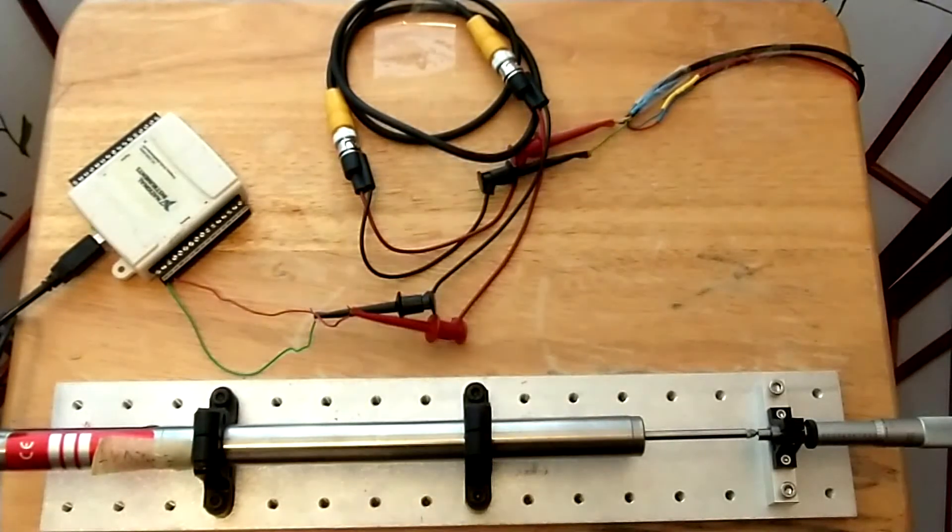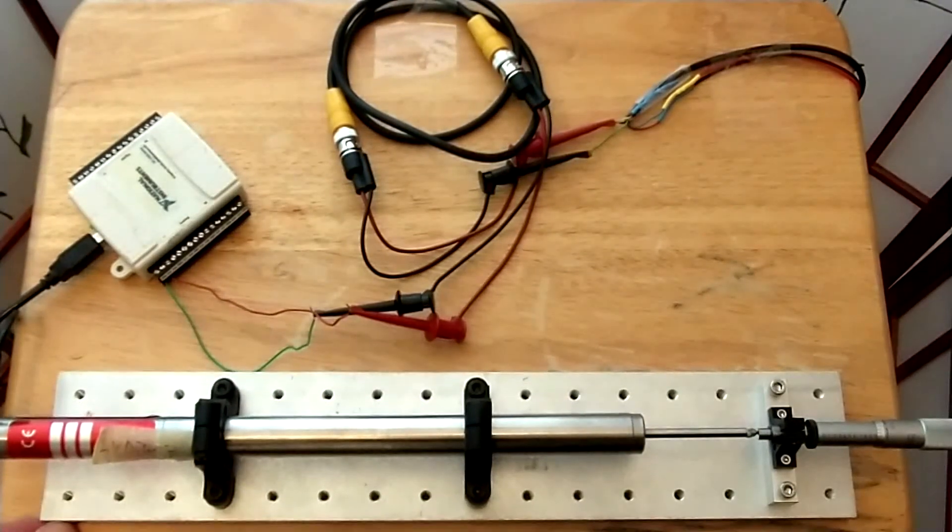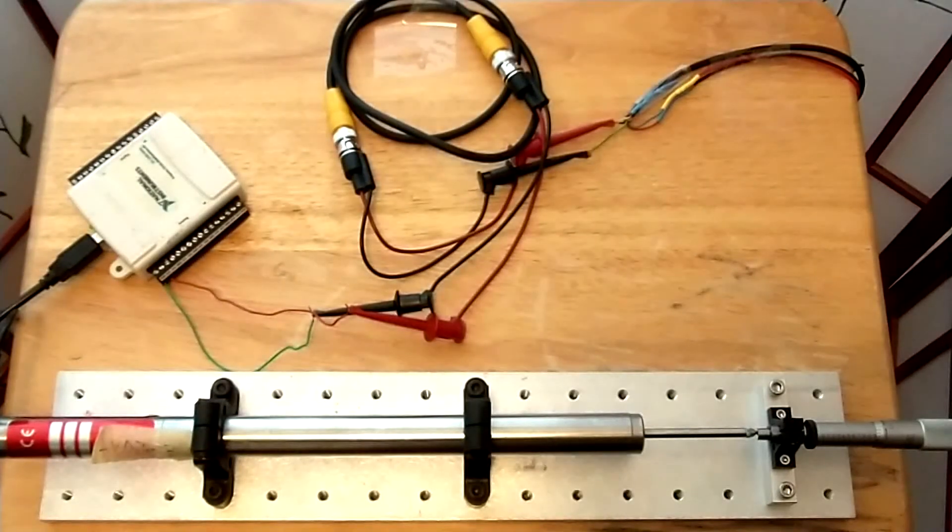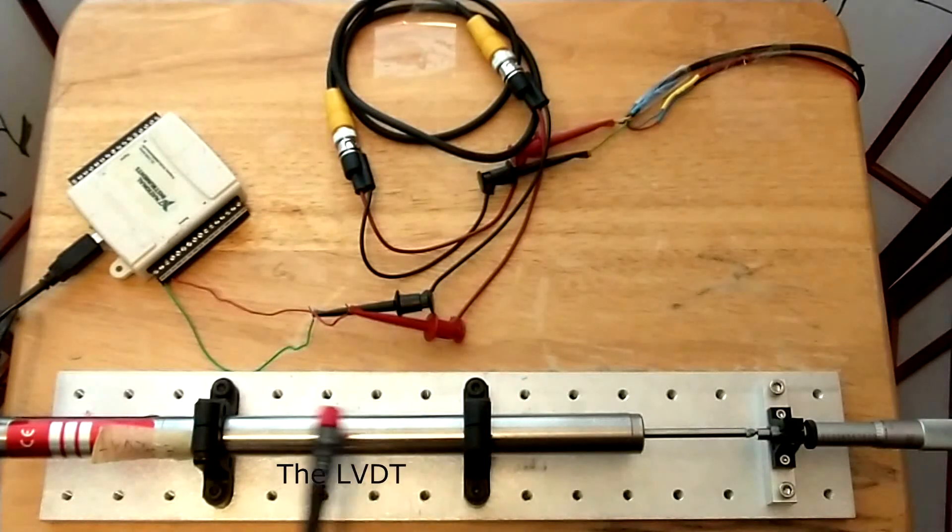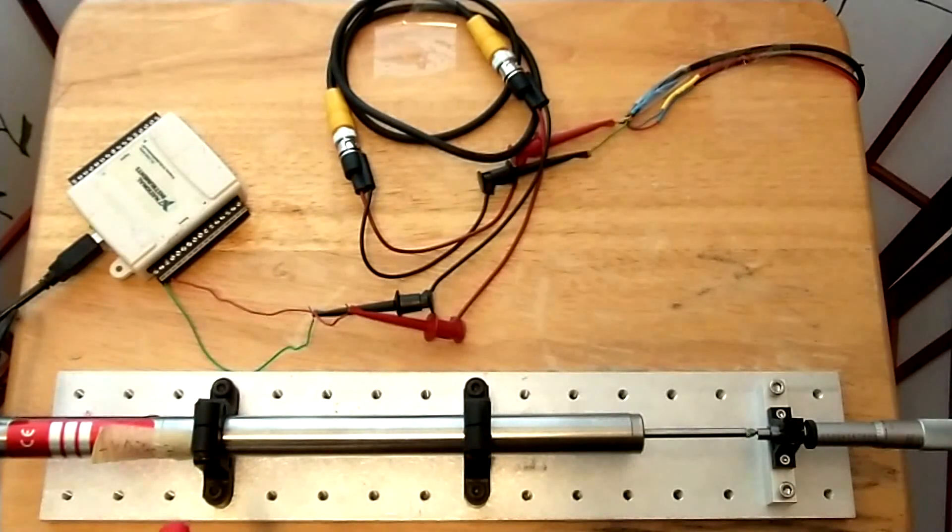Hello, this is our setup for our LVDT system, the Linear Variable Differential Transformer. The LVDT is seen here. It's this long cylinder, and inside the cylinder, we have the adjoining electromagnets.